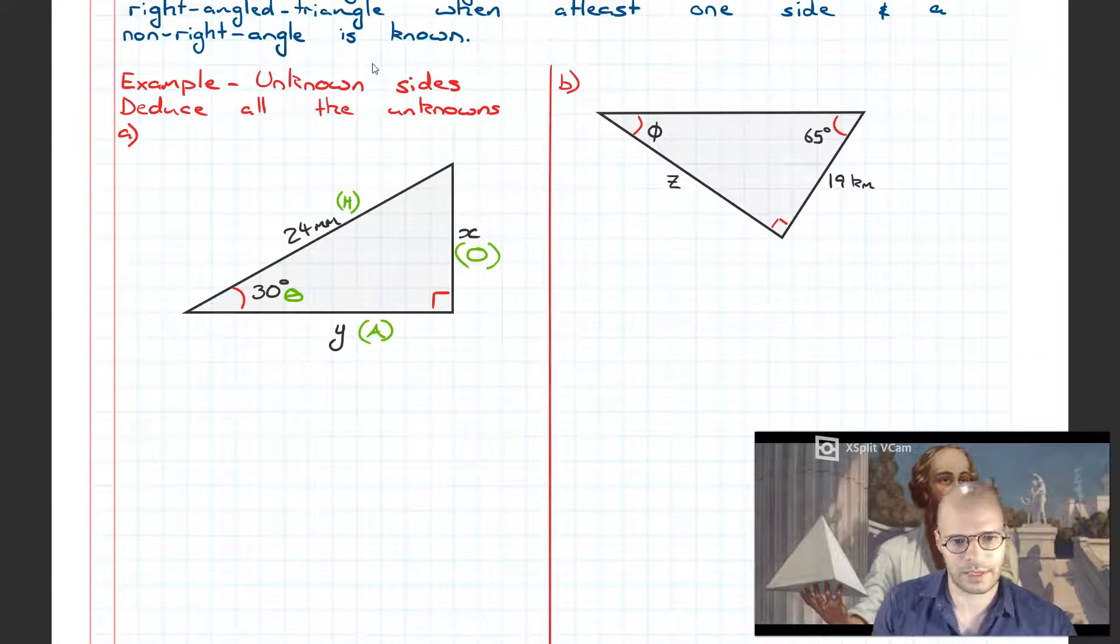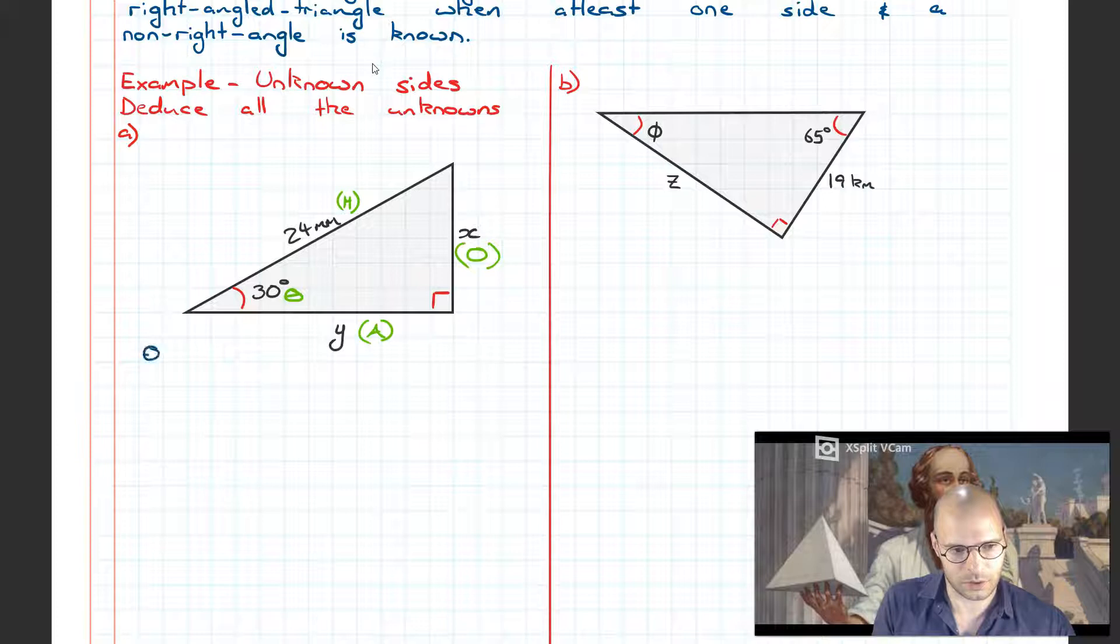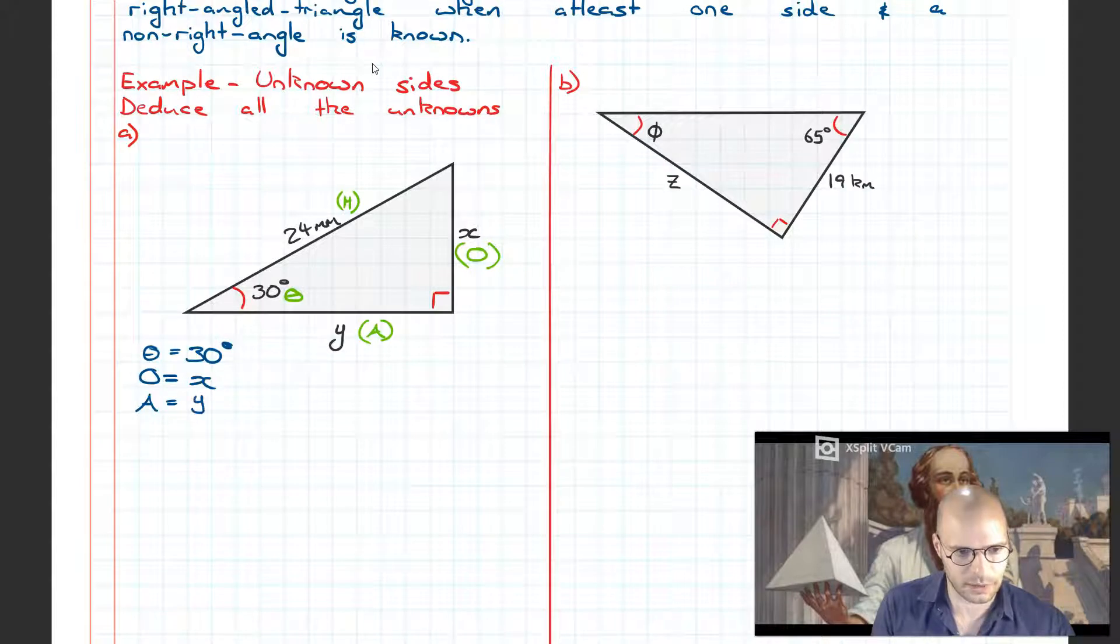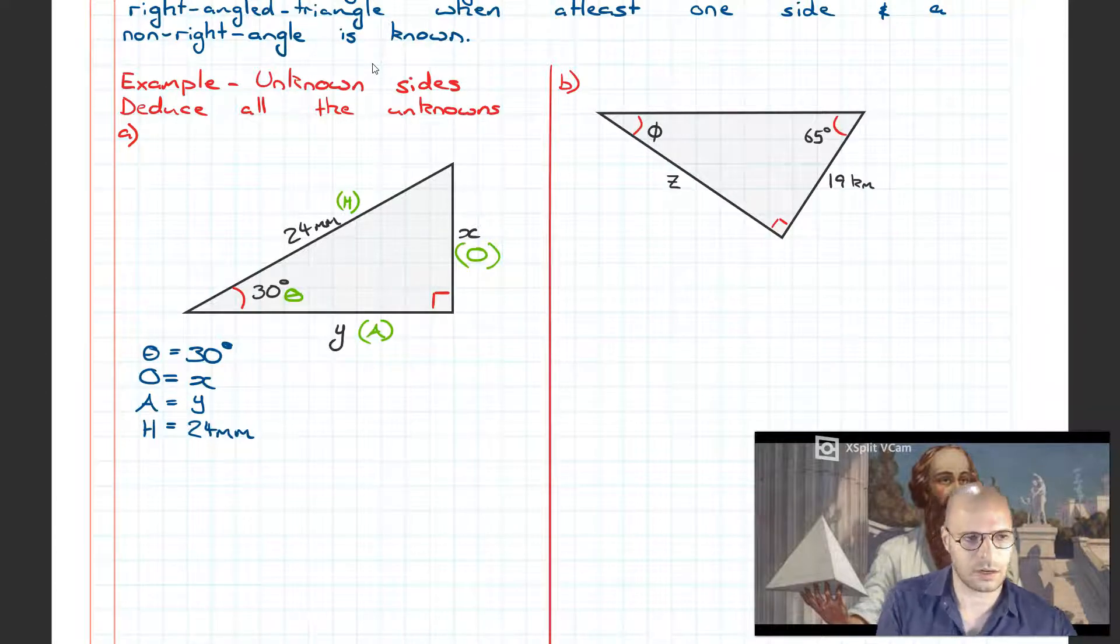We've got it all labeled. The next step I recommend is listing all of the quantities that we have in this triangle. I'm going to go theta equals 30 degrees. Next is the opposite, we have a value of X. Our adjacent is also unknown, assign the value of Y. The final quantity, our hypotenuse, has a value of 24 millimeters.